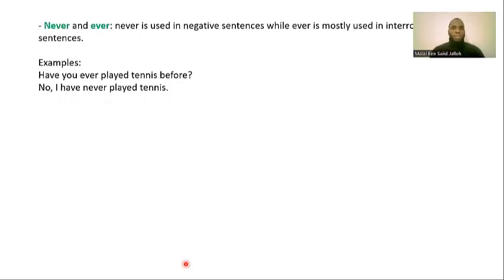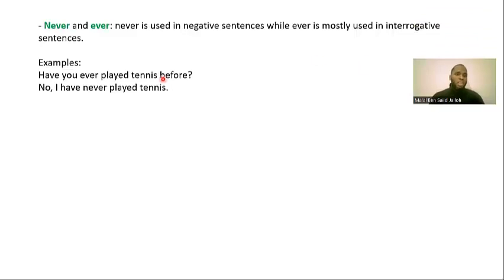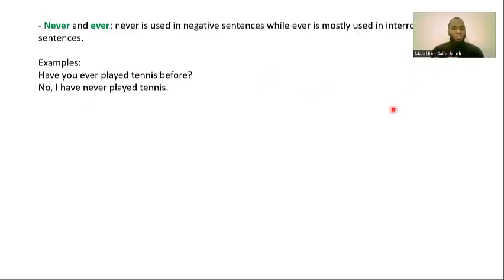'Never' and 'ever': 'never' is used in negative sentences while 'ever' is mostly used in interrogative sentences. For example: 'Have you ever played tennis before?' — asking if you have experienced playing tennis. The answer could be: 'No, I have never played tennis.' So we can make a negative sentence using 'not' or using 'never' to put the sentence into the negative form.